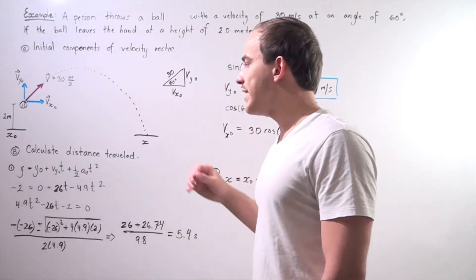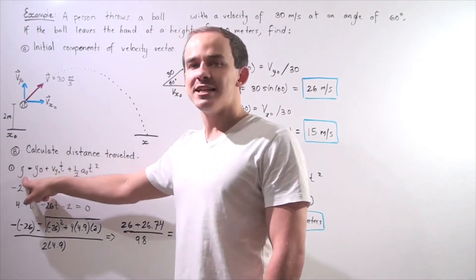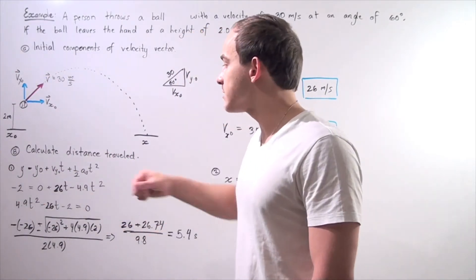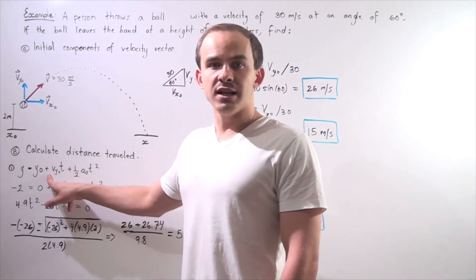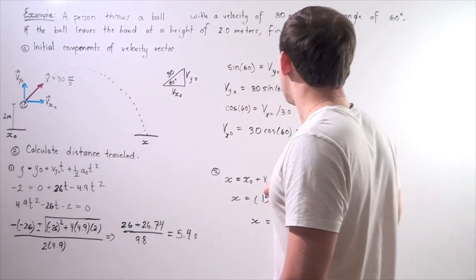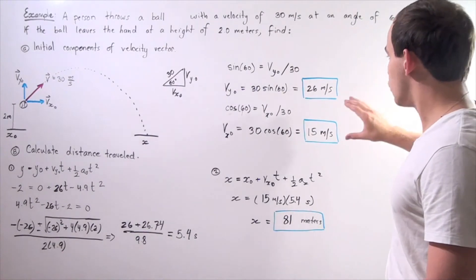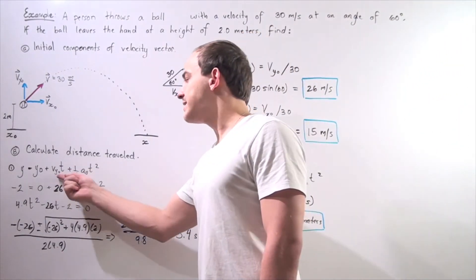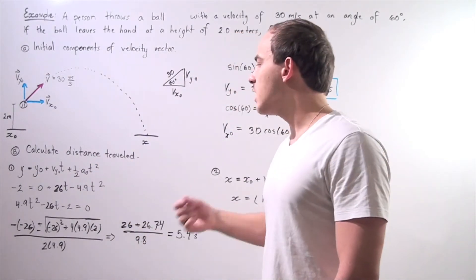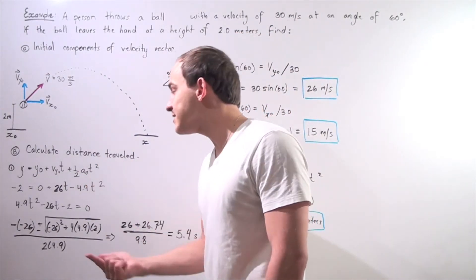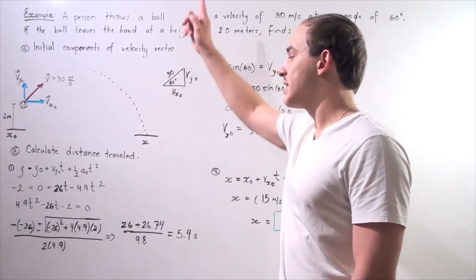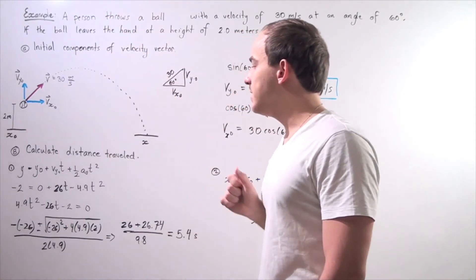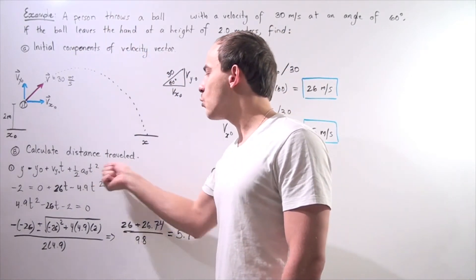Our final position along the y-axis is equal to our initial position along the y-axis, plus our initial velocity along the y-axis — which we found in part A to be 26 meters per second — multiplied by time, plus one-half times the gravitational constant, which points in the negative direction because we choose upward to be positive and downward to be negative, multiplied by time squared.